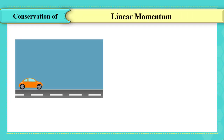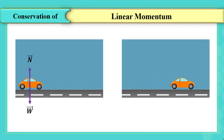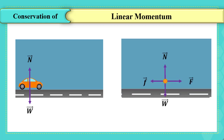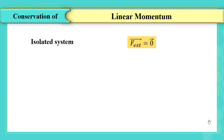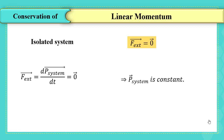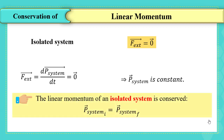Conservation of linear momentum: consider a system at rest where the forces are the normal reaction and the weight — their sum is zero. Also consider a moving car where the forces are normal reaction, weight, motor force, and friction — their sum is also zero. In both cases the system is isolated. For isolated systems where the sum of external forces equals zero, dp vector by dt equals zero, meaning p vector is constant. Therefore, the linear momentum of an isolated system is conserved: p vector initial equals p vector final.